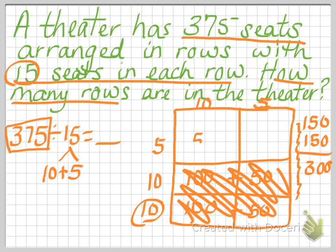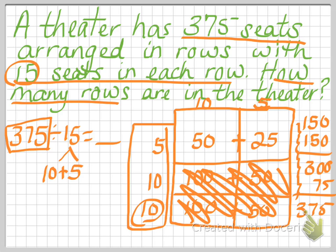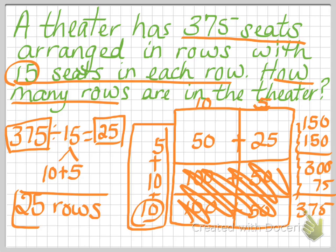10 times 5 is 50, and 5 times 5 is 25. So 50 plus 25 is 75. Now I have 300 plus 75 — that is 375. That's the number I started with. So I know these numbers added together are going to equal my quotient: 10 plus 10 plus 5 is 25. So 375 divided by 15 equals 25. There are 25 rows in the theater. That would be my answer — I'd want to box that.